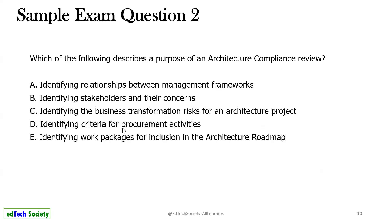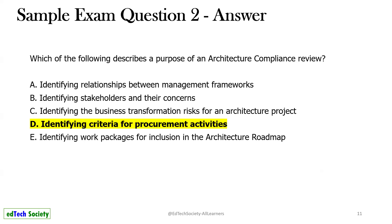Question 2: Which of the following describes the purpose of an architecture compliance review? Options: A — identifying relationships between management frameworks; B — identifying stakeholders and their concerns; C — identifying the business transformation risk for an architecture project; D — identifying criteria for procurement activities; E — identifying work packages for inclusion in the architecture roadmap. The answer is D — identifying criteria for procurement activities. There are a few steps in an architecture compliance review, and the main purpose is identifying criteria for procurement activities.